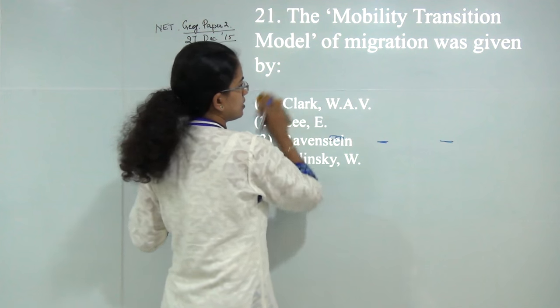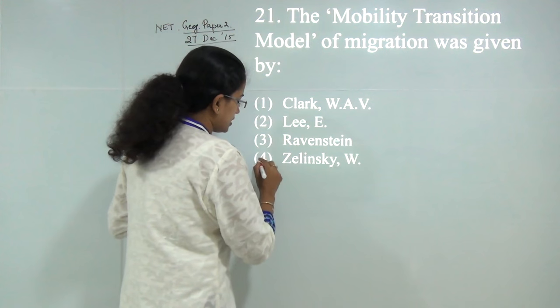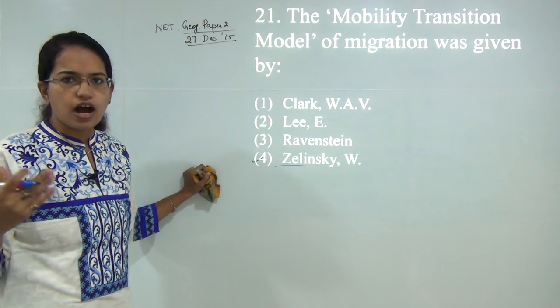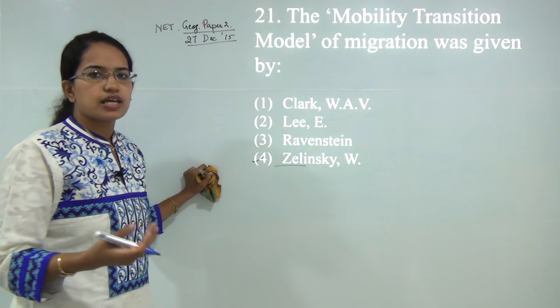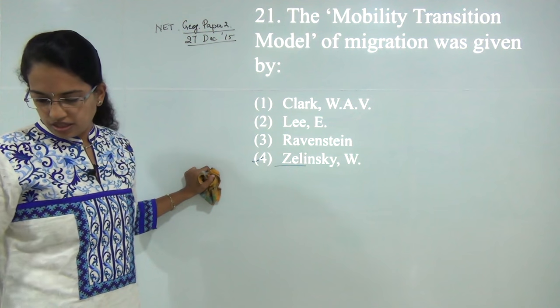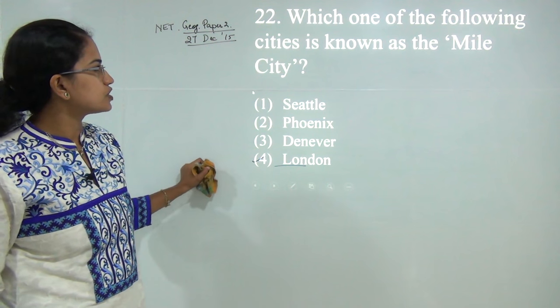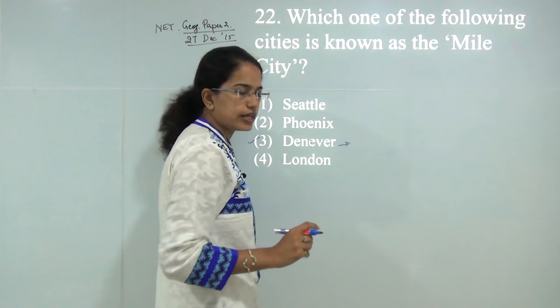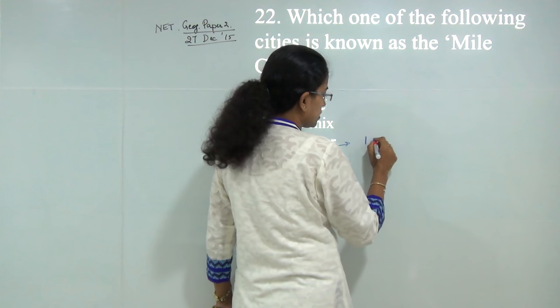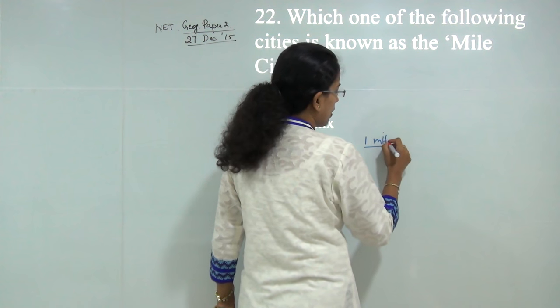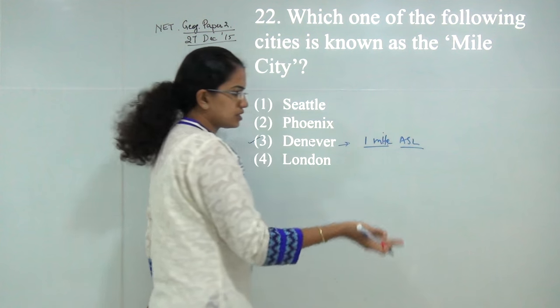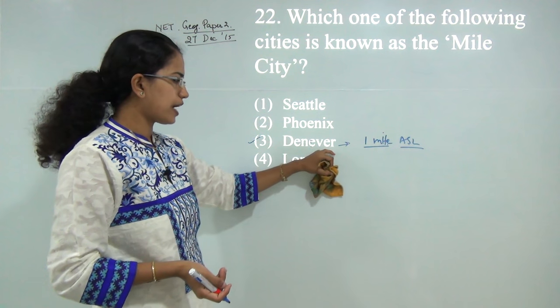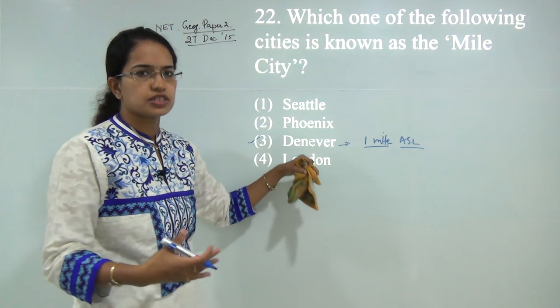Next: the mobility transition model was propounded by Zelinsky. We've talked about this in detail, including intervening opportunities and how migration depends on development and type of society. Next: which city is known as Mile City? The correct answer is Denver, capital of Colorado in the United States. It's known as Mile City because it's located about one mile above sea level, well known for aircraft, food processing, and consumer durables.